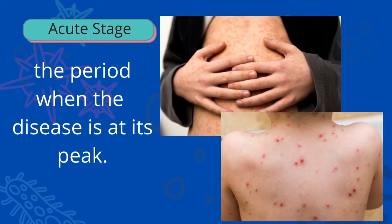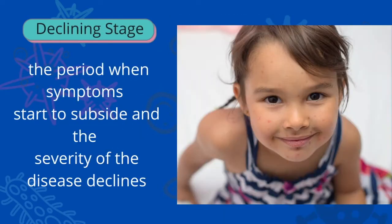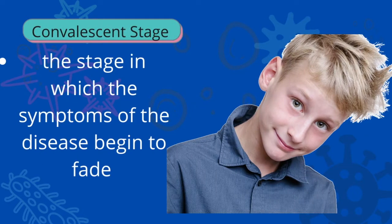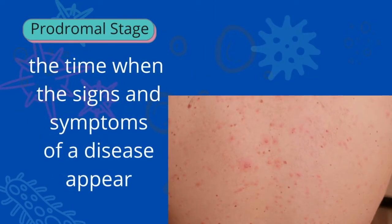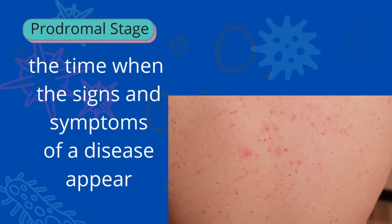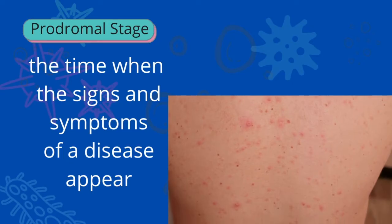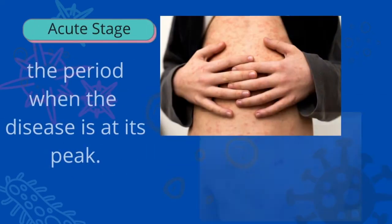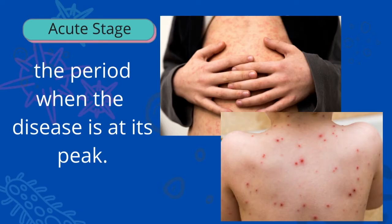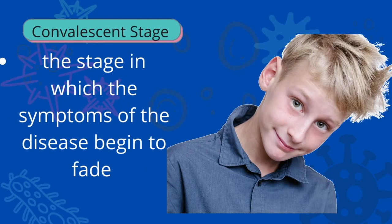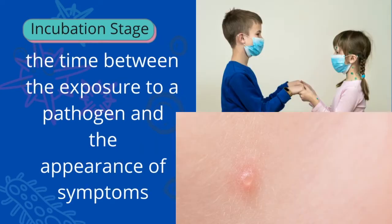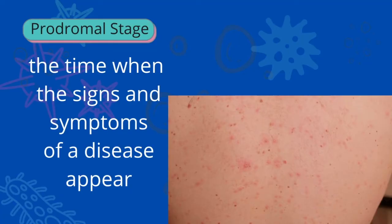Chickenpox typically lasts around two weeks, so you may be absent from class. The declining stage is the period when symptoms start to subside and the severity of the disease declines. The fever goes away, some of the blisters dry up. However, during this stage you can still be contagious, so isolation is important — avoid contact with other people so you don't spread it to them.